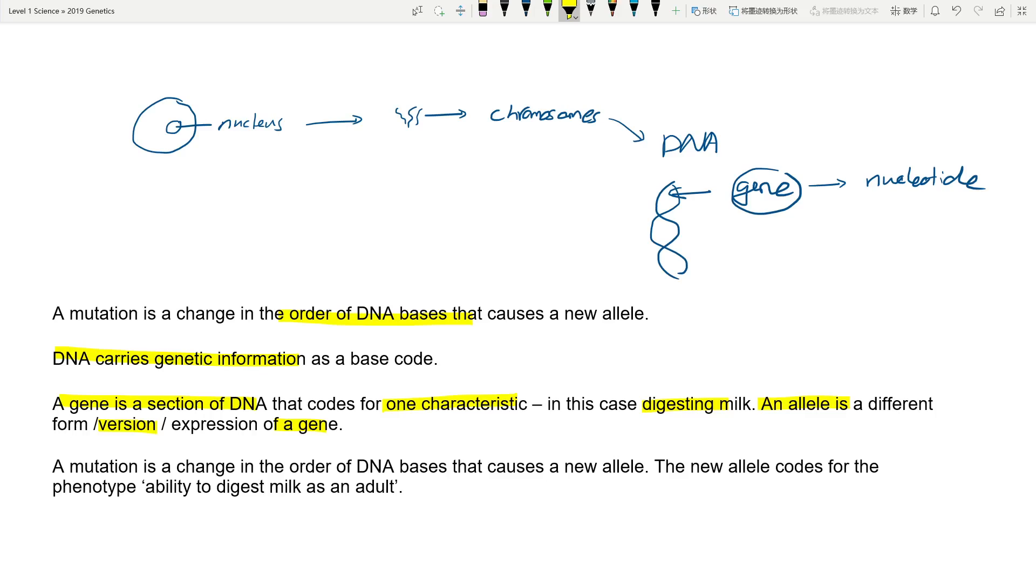The allele is a different version or alternative expression of the gene. I'll give you this example again - I hate using this example because it's not necessarily right, because most human alleles and physical appearances are caused by multiple genes. In year 11 you just need to know one gene codes for one characteristic.